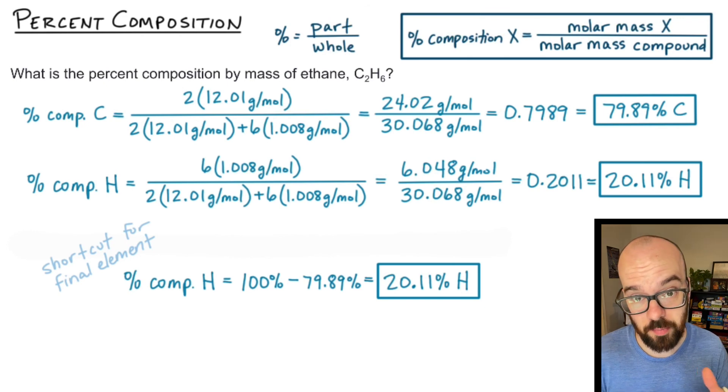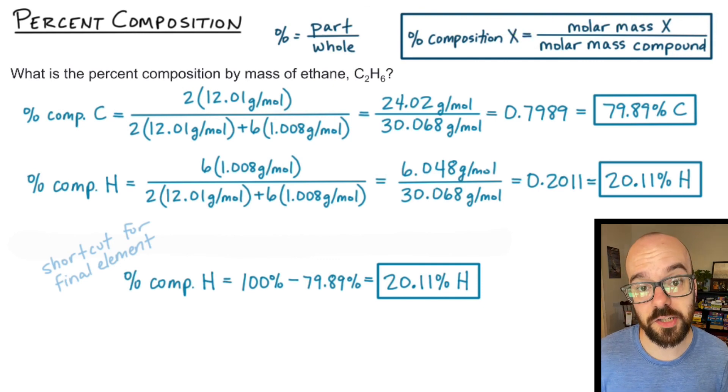So that's how we find the percent composition by mass of a substance starting with its molecular formula. You're just going to take the molar mass of the element that you're interested in divided by the molar mass of the whole compound. Divide that all out, multiply by 100%, and then you have the percent composition by mass of that element in the compound that you're studying.